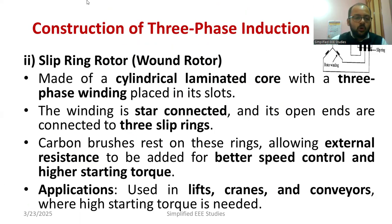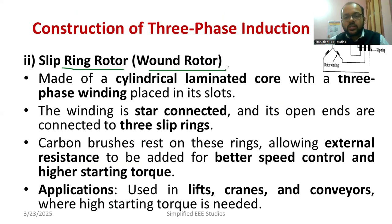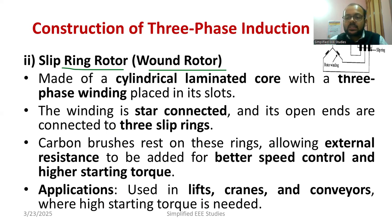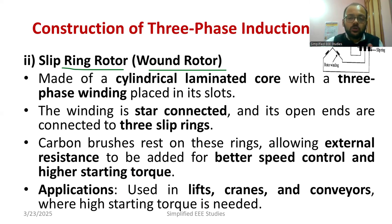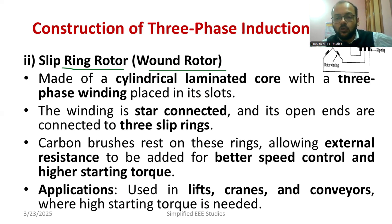The second type is the slip ring rotor, also known as the wound rotor induction motor. You can add external resistance by connecting it with the slip rings. External resistance is added because the torque of the induction motor is directly proportional to the external resistance — as you add more external resistance, the torque also gets very high.